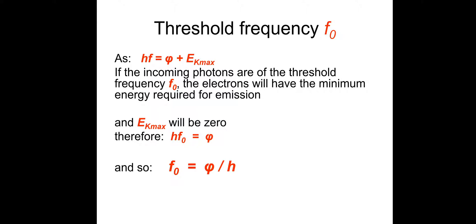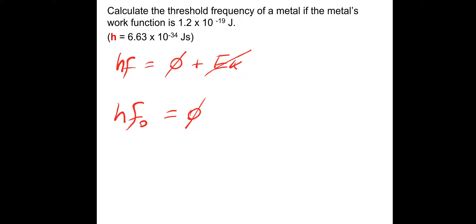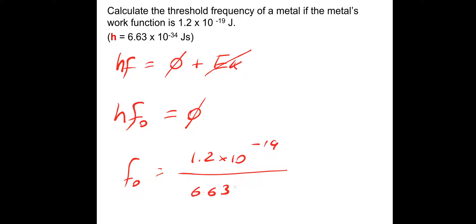This is very common in examinations. First question: calculate the threshold frequency of a metal if the metal's work function is 1.2 times 10 to the minus 19 joules. At the threshold frequency the kinetic energy equals zero, so Planck's constant times the threshold frequency equals the work function. Rearranging: threshold frequency equals the work function 1.2 times 10 to the minus 19, divided by Planck's constant 6.63 times 10 to the minus 34, which gives 1.81 times 10 to the 14 hertz.